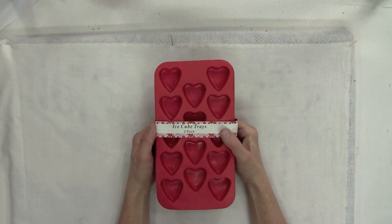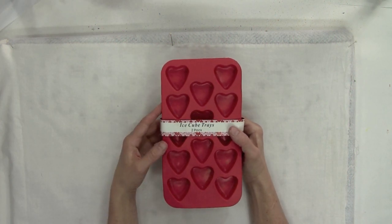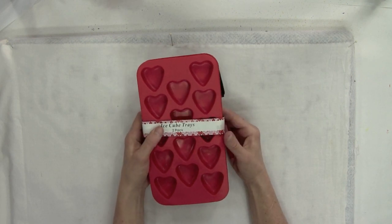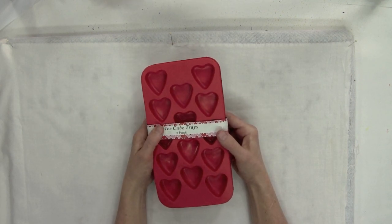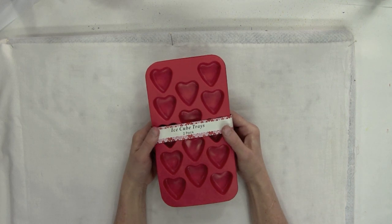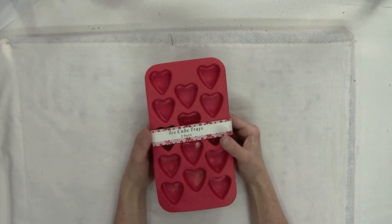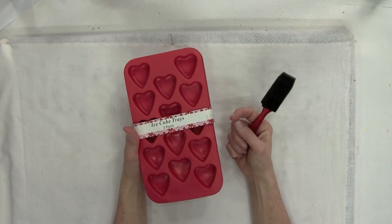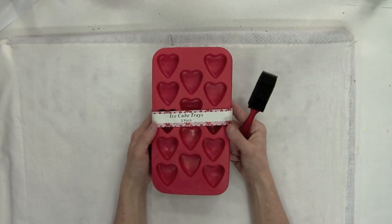I'm going to show you how to use heart-shaped ice cube trays to print on fabric. I always look for things in the dollar stores and the dollar section of regular stores around any type of commercial holiday for things that I might use in my art supplies, whether they're for printing or for ephemera, collage material, that type of thing.